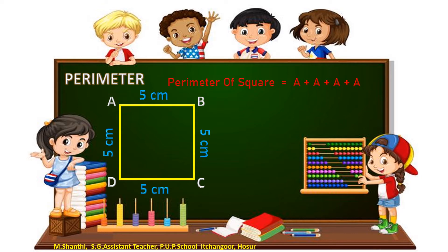the perimeter of the given square is A plus A plus A plus A, that's equal to 4 times A units. A equals 5 cm. So, 5 plus 5 plus 5 plus 5, that's equal to 4 times 5, which is 20 cm.